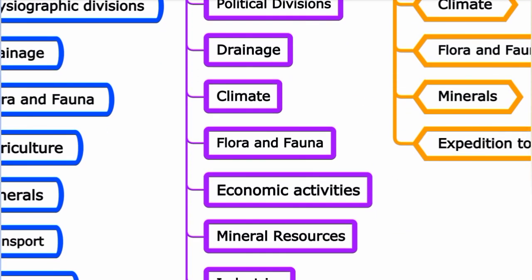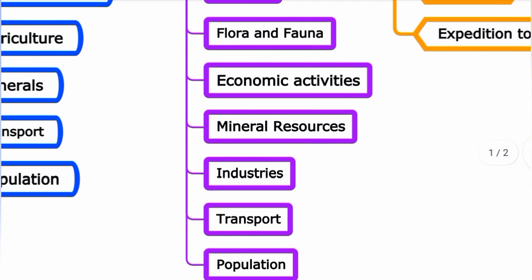Major economic activities in Australia include agriculture, forestry, fishing, mining, manufacturing, trade, and services. Minerals are a major export, contributing approximately 10% of Australia's GDP.